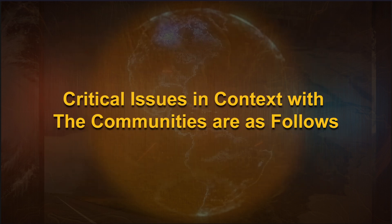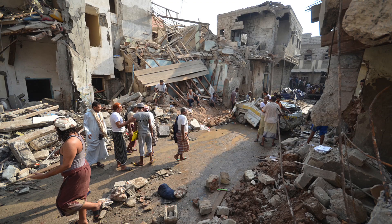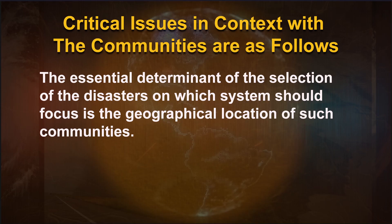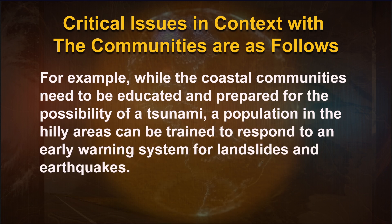Critical issues for communities include: vulnerable populations must be aware of hazards and potential adverse impacts to which they are exposed, and be able to take specific actions to minimize threat, loss or damage. The geographical location of communities determines which disasters a warning system should focus on. For example, coastal communities need education and preparation for tsunamis, while populations in hilly areas can be trained to respond to early warning systems for landslides and earthquakes.